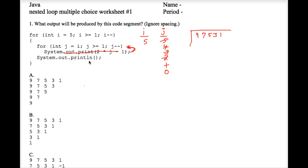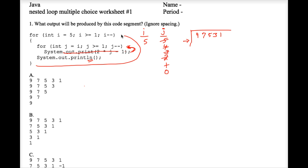We don't execute the inner loop anymore. Instead we drop down to the println line of code and print a new line, so our blinking cursor moves down to the next line. We hit the closing curly brace which loops back up to the top of the outer for loop.